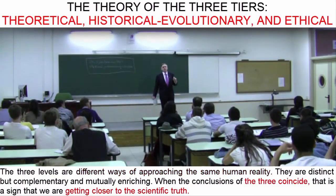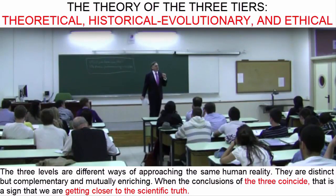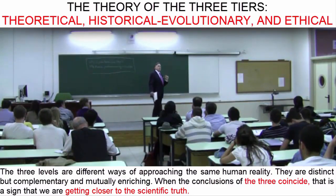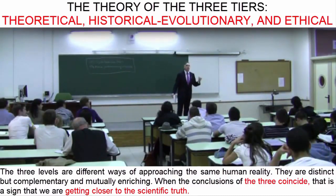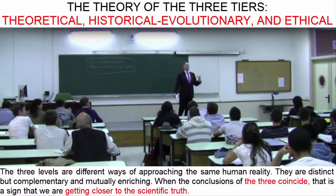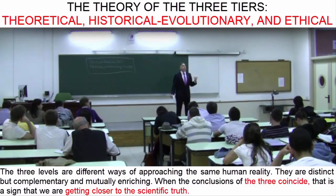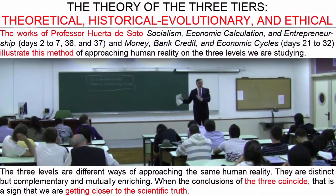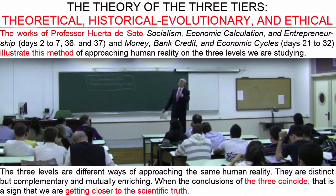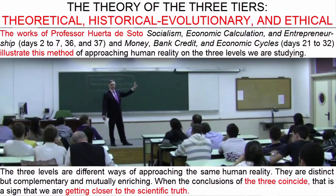It may turn out that the conclusions we reach on these three levels seem to point in the same direction. We social scientists know that we must recognize the limitations of the human mind and the fact that we are constantly in danger of erring and must refine our theories again and again. However, if we see that conclusions in the area of ethics, in the area of evolutionary history, and in the area of economic theory point in the same direction, then we can be relatively certain that we are getting closer to the scientific truth. Thus, if you read any of my works — for instance, Socialism, Economic Calculation and Entrepreneurship, or Money, Bank Credit and Economic Cycles — you will see that in all of them I use this multidisciplinary approach based on the three tiers or levels.